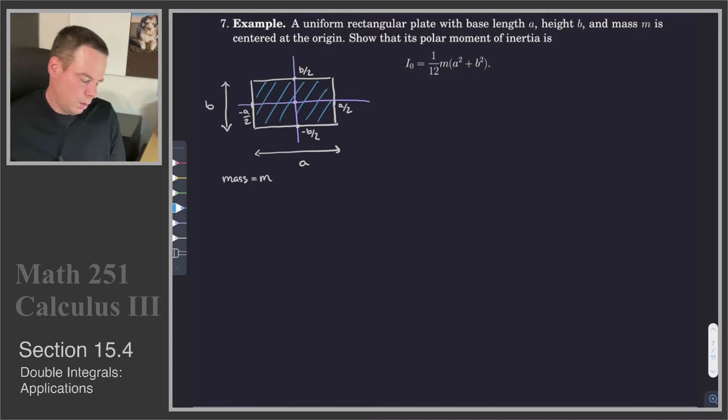And what we're interested in is finding the polar moment of inertia. We want to show that it's actually 1/12 M times (A² + B²).